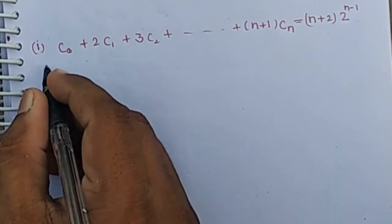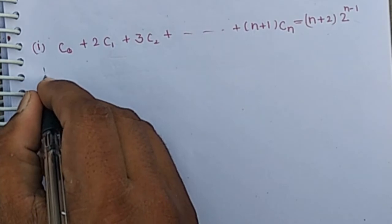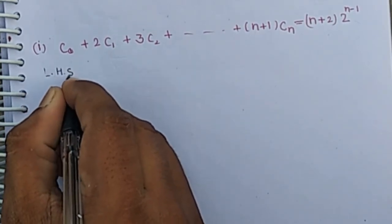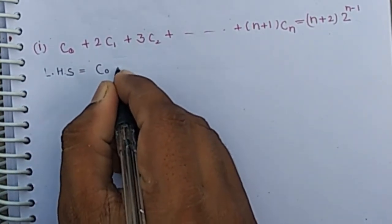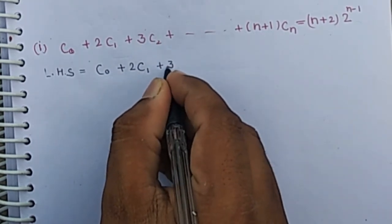Then our first step is we summarize the given expression. LHS equals C0 plus 2C1 plus 3C2 and so on.